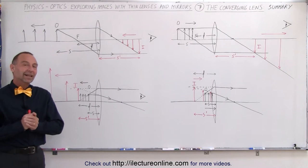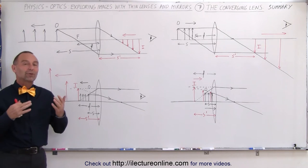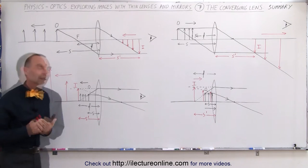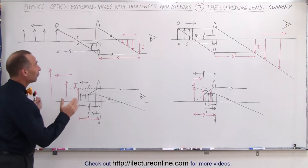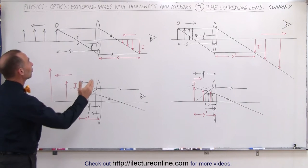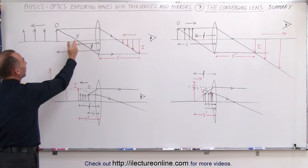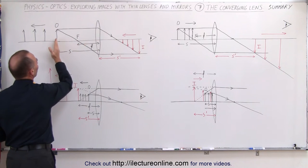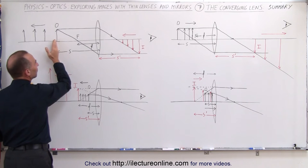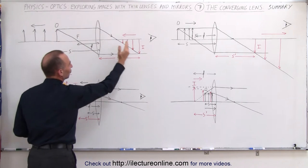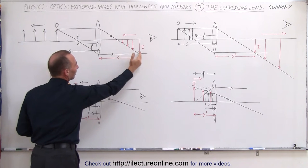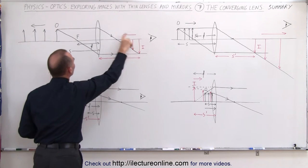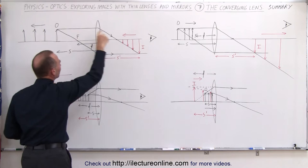Welcome to ElectronLine. Let's summarize what we've learned so far with the converging lens. In the first instance, we placed the object at twice the distance of the focal length. We found that the image was formed on the other side — a real image, inverted, and the same size as the object.